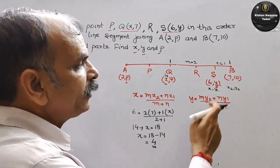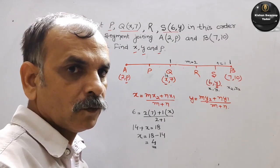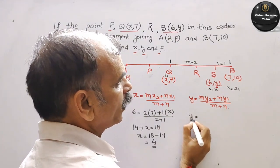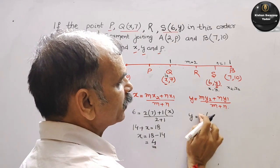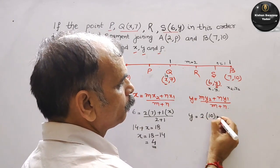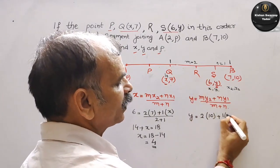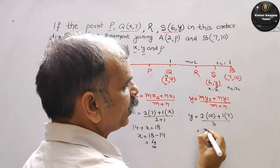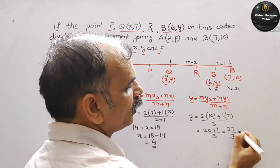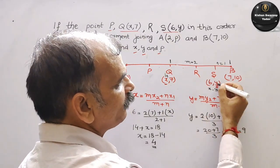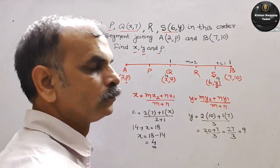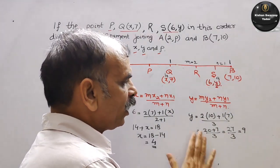Theek hai. Toh hamara X ka value nikal gaya. Ab Y ka value nikaalte hain. Y = (M·Y2 + N·Y1) / (M + N). M = 2, Y2 = 10, N = 1, Y1 = 7. Toh Y = (20 + 7) / 3 = 27/3 = 9. Toh Y is 9. Yeh wali value hamaari 9 ho gayi. Hamara X ka value bhi nikal gaya aur Y ka value bhi nikal gaya.